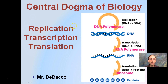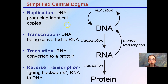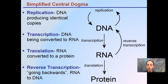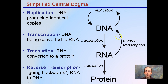This process of replication, transcription, and translation is what's called the central dogma of biology. You should be very familiar with each of these terms. DNA making more DNA is replication — that's producing identical copies, and that's key.